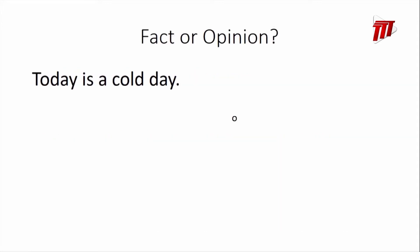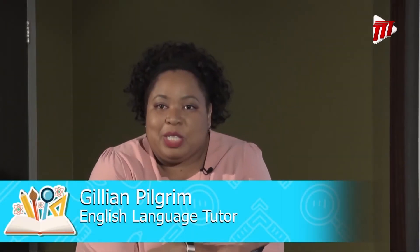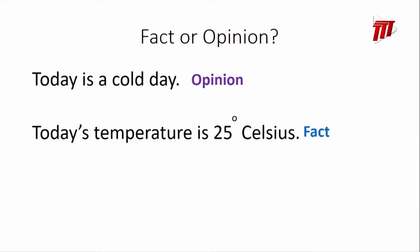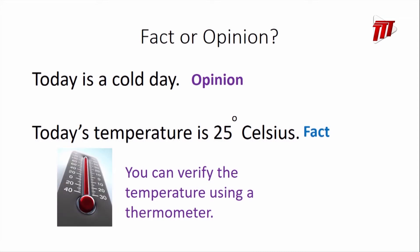Let's look at another example. 'Today is a cold day' — or — 'Today's temperature is 25 degrees Celsius.' Which one is the fact? 'Today is a cold day' is an opinion, because feeling cold differs from person to person. However, 'Today's temperature is 25 degrees Celsius' is a fact, because you can verify temperature using a thermometer, which is a reliable source.